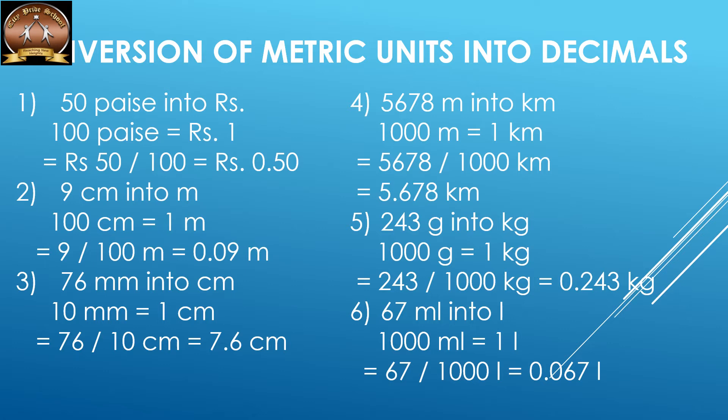76 millimeters into centimeters: the conversion is 10 millimeters equal to 1 centimeter, so 76 divided by 10 centimeters equals 7.6 centimeters. The next one is 5678 meters into kilometers. The conversion is 1000 meters equal to 1 kilometer.